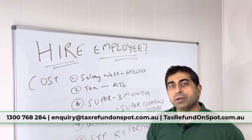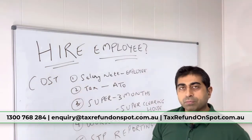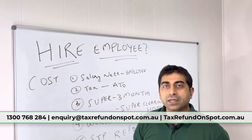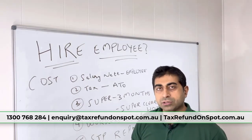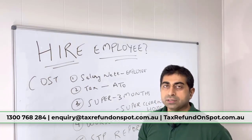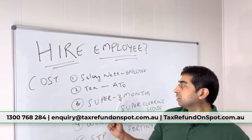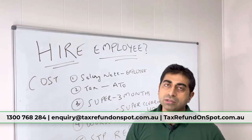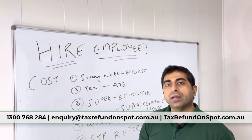The third thing is super. The current rate is 9.5% of the gross salary — not the net salary. So if the gross salary is $1,000 a week, multiply by 9.5% — that's $95 a week. You pay super every three months through a super clearing house. There are many clearing houses, and ATO is one of them — it's called the ATO Small Business Super Clearing House.